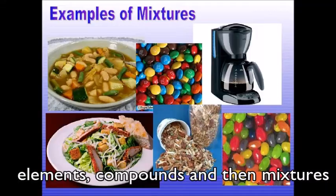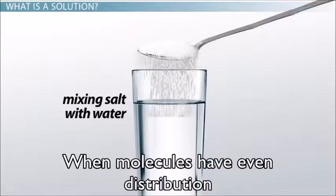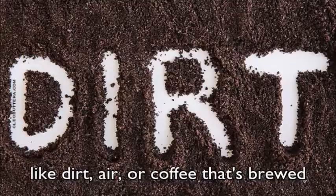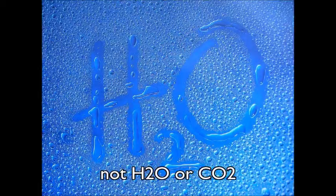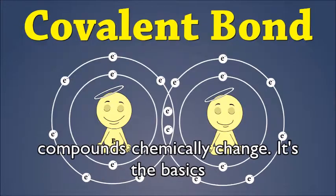Elements, compounds, and then mixtures. Heterogeneous - everything looks different. Homogeneous - molecules have even distribution, it's uniform. The mixture's a solution like dirt, air, or coffee, not H2O or CO2, because mixtures are mechanically mixed. Compounds can chemically change into the basics.